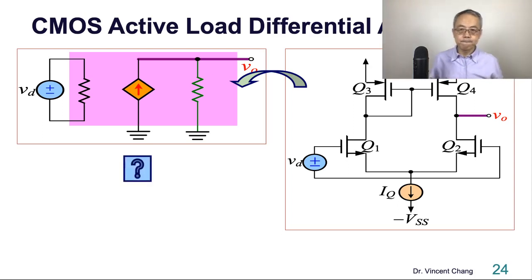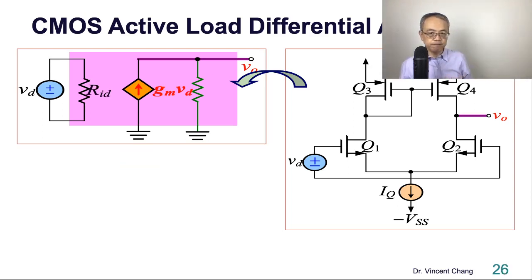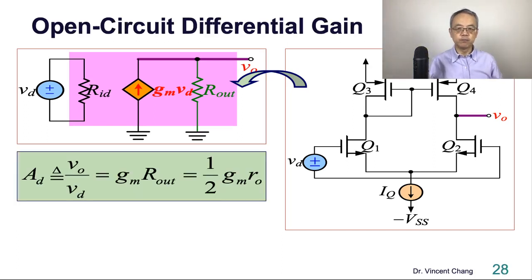gm VD. The current flowing to the output resistance Rout. So the final answer is gm times the output resistance. If R2 and R4 happen to be the same, we can simplify this as half gm times the output resistance of MOS transistor. But you have to pay attention: the way to calculate the output resistance for bipolar and MOS is kind of different.